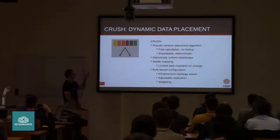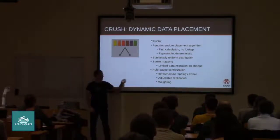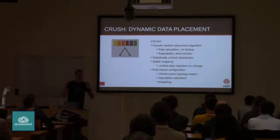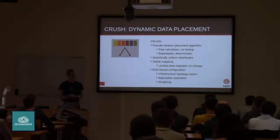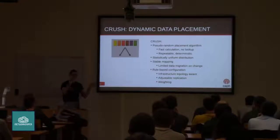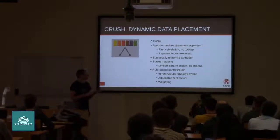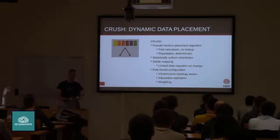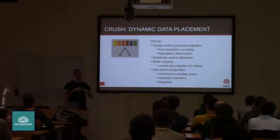CRUSH has an idea of what the cluster looks like — not just the number of servers, but different failure domains and physical locations. You can specify two data centers, each with rooms and racks and machines. The calculation is pseudo-random, so it looks approximately like a random distribution but gives the same answer every time and is very fast. It's also a stable mapping — unlike some hash ring systems where going from three to four servers moves all the data, if you have ten servers and add one, only about one-eleventh of your data will move.